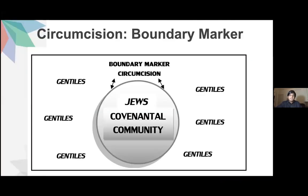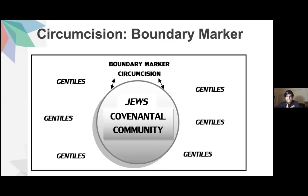Circumcision marks those who belong to the community and those who are outside, especially the Jewish community. This is how it may look in a diagrammatic sense: those inside the circle are called Jews because they have gone through circumcision, and the outsiders are considered Gentiles because they did not. Jewish missionary movements in the intertestamental period encouraged the Gentiles to worship the one true God over against the other gods of the Mediterranean world.